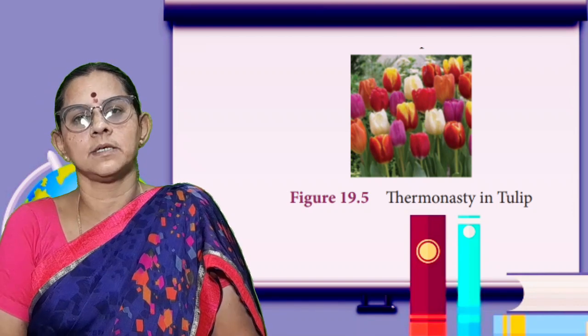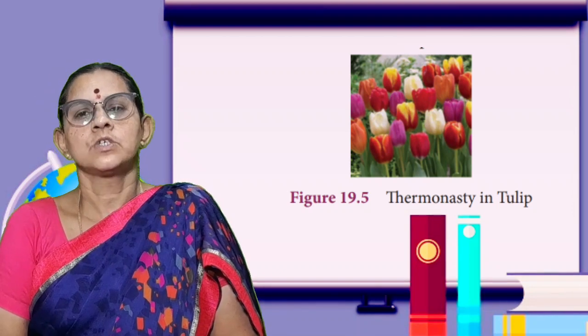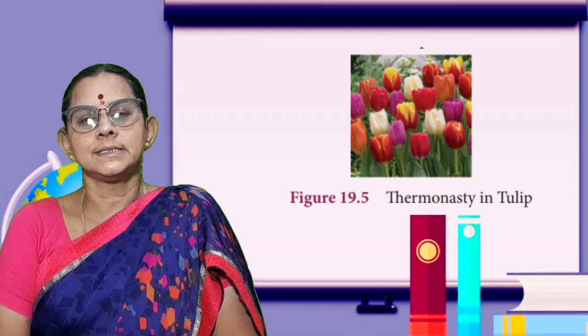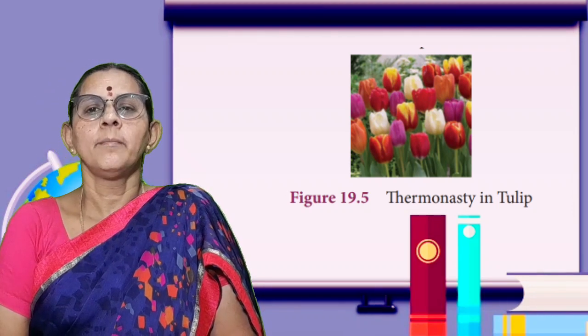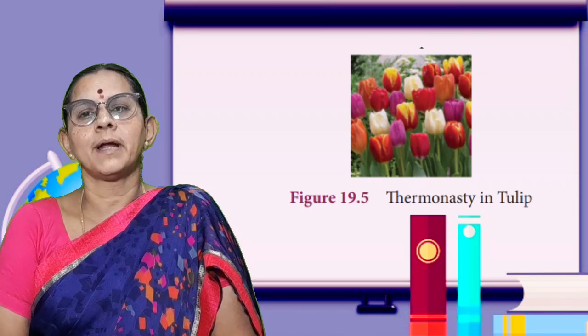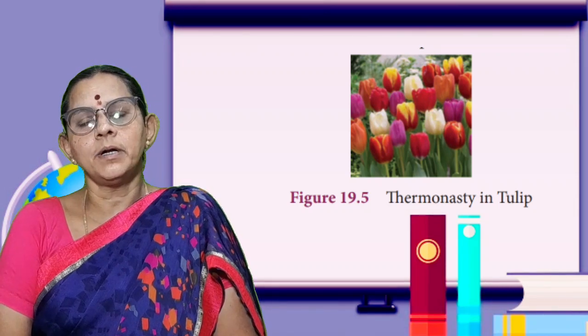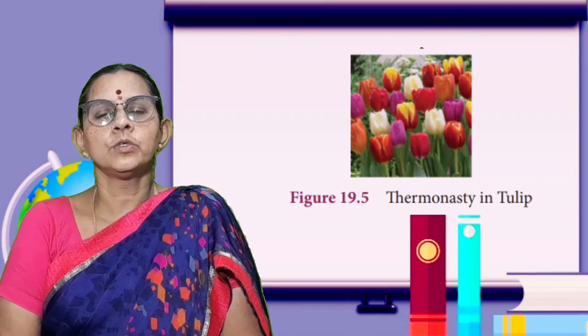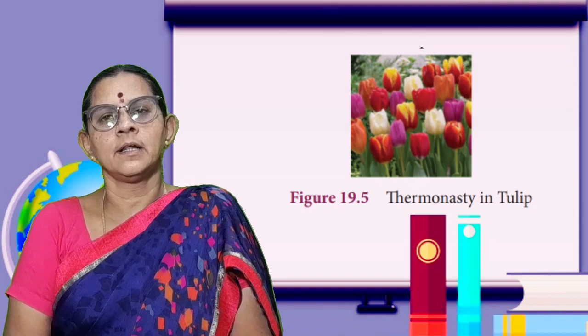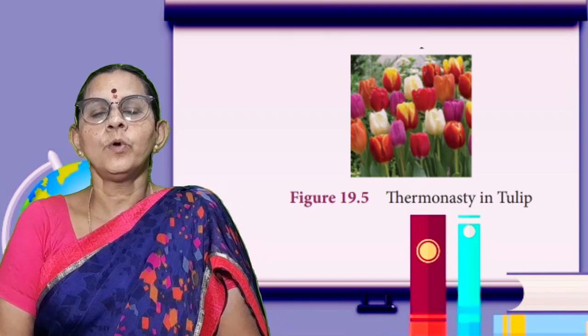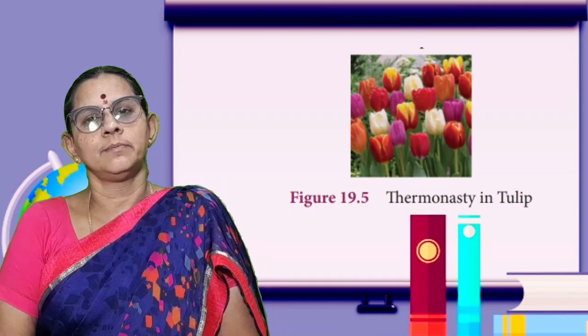When the temperature rises to around 10 or 15 degrees, the tulips open up. That is the example of thermonasty — movement in response to temperature change. Now we have covered tropisms and nastic movements.